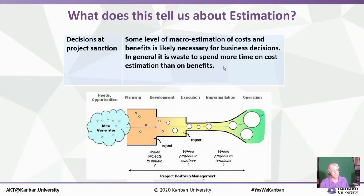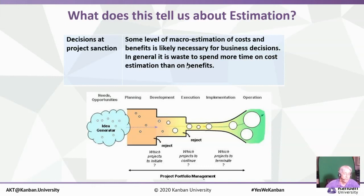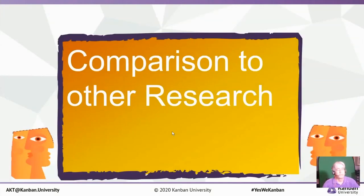What does it tell us about macro estimation decisions at project sanction? Some level of macro estimation of costs and benefits is likely necessary for your business decisions — you're making a decision up front with no data to start from, so you'll probably need some level of macro estimate. But you shouldn't be spending more time estimating costs than you spend on estimating the value. And if the decision is 'I'm going to do this regardless,' you shouldn't be bothering with estimates at all.